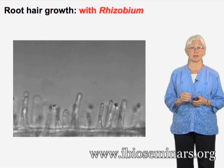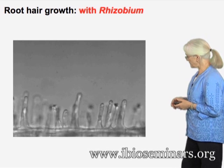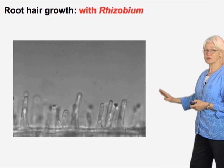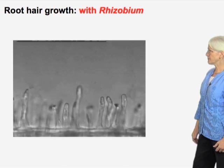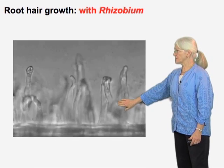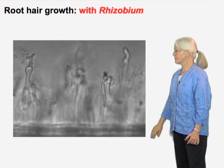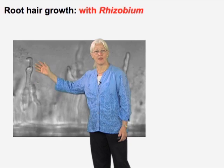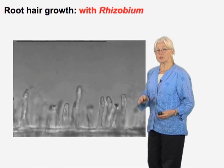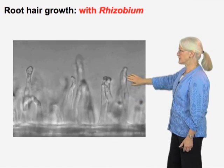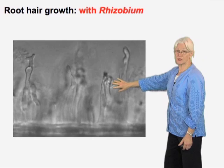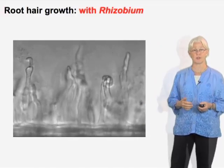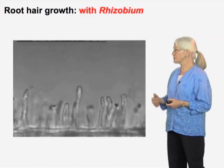Now we're going to look at root hairs on a plant that has been treated with its rhizobium symbiont. Here the root hairs are in the process of growing, and if you watch what happens to them, you'll see how different it is from unperturbed growth. We see root hairs that are curling. One root hair is growing and then it pauses, then it emerges, pauses, and branches again. There's two things going on: a characteristic pause right before it starts to top over, and branching or curling. Rhizobium has a profound effect on the morphogenesis of this plant cell.